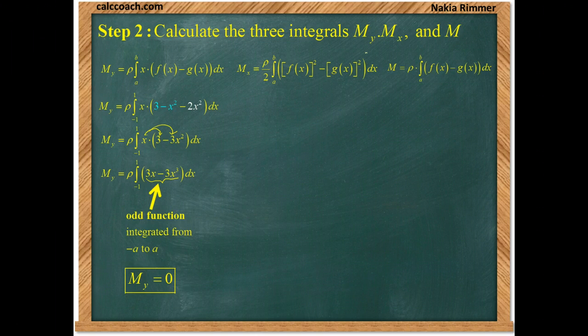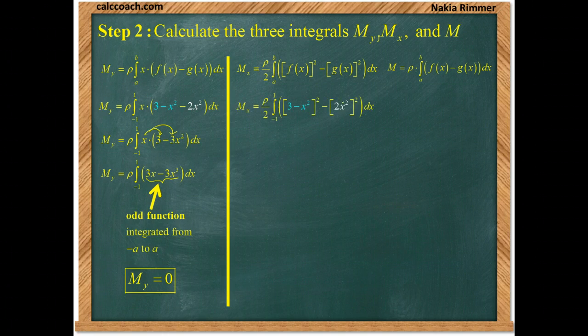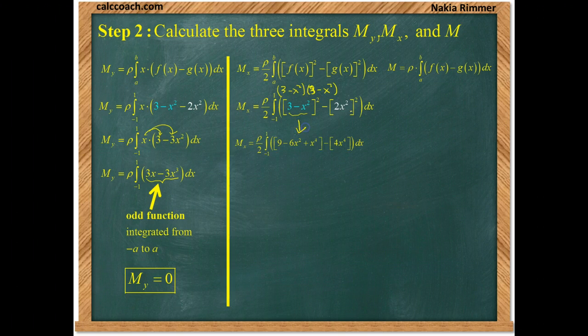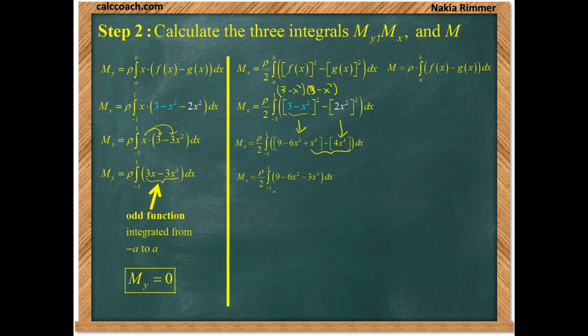Generally, what that means is that you have some sort of symmetry. And so, let's go and now check the moment about the x-axis. We have the formula where we replace f of x by 3 minus x squared. Replace g of x by 2x squared. But in this formula, we square them first and then subtract. So, if we square out 3 minus x squared, we end up with 3 minus x squared times 3 minus x squared. That ends up as 9 minus 6x squared plus x to the fourth. Squaring 2x squared, we get 4x to the fourth. Combining these, we end up with 9 minus 6x squared minus 3x to the fourth.